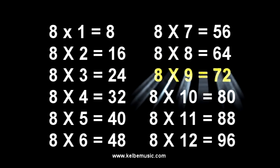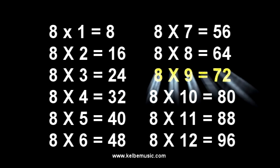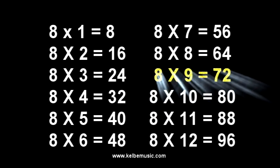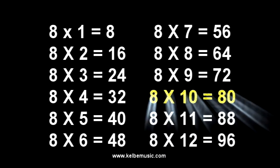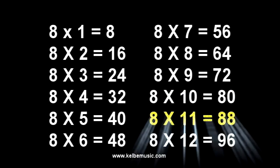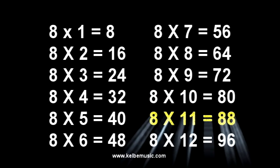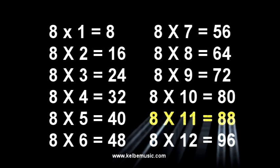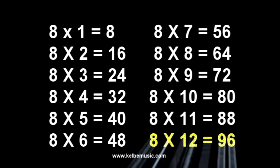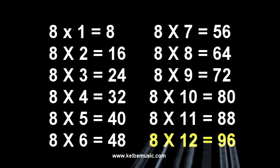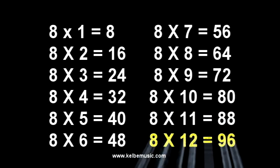8 times 9 is 72, 8 times 10 is 80, 8 times 11 is 88, 8 times 12 is 96.